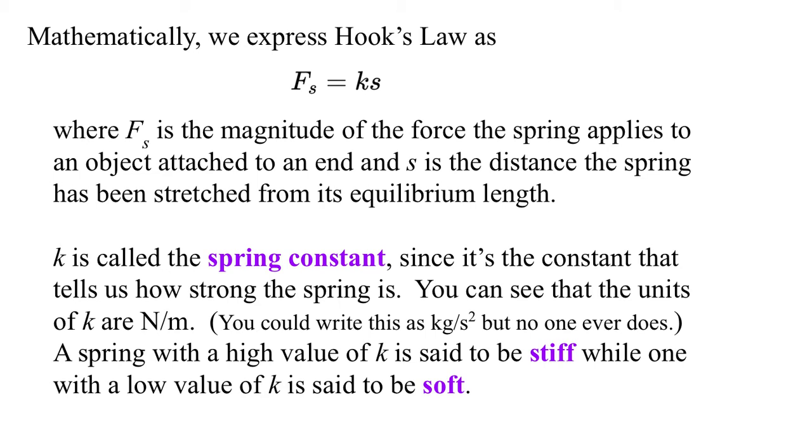Mathematically, we express Hooke's Law as F sub S, the force of the spring, equals K times S. F_S is the magnitude of the force of the spring. For this formulation, it's the magnitude of the force. It doesn't include its direction. S is the distance the spring has been stretched, or if we're going to do magnitudes, compressed—the deformation in the spring from its equilibrium length.